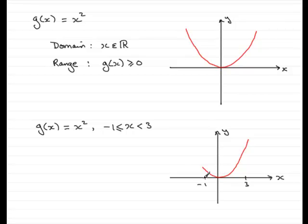So what would the values be when x is minus one? Well, minus one when you square it is one. So that would be one there on the y axis. And when x is three, three squared is nine. So that would be nine up here.